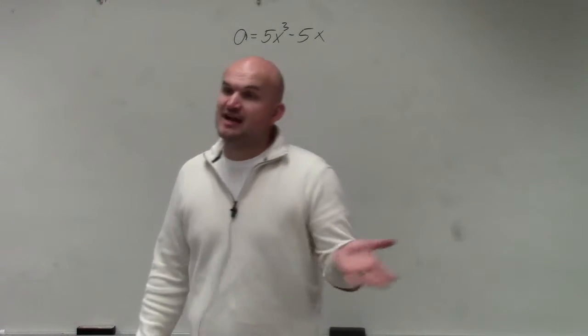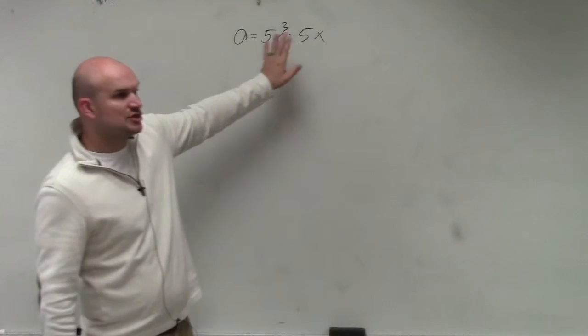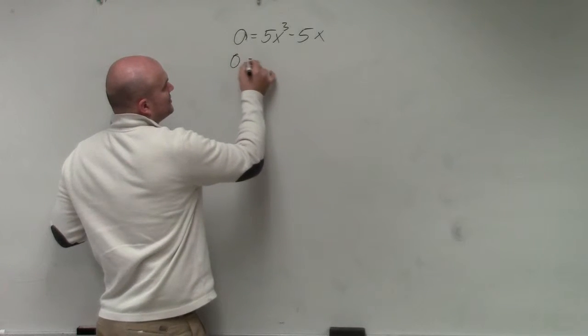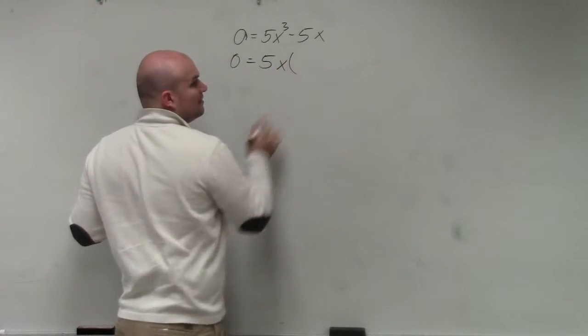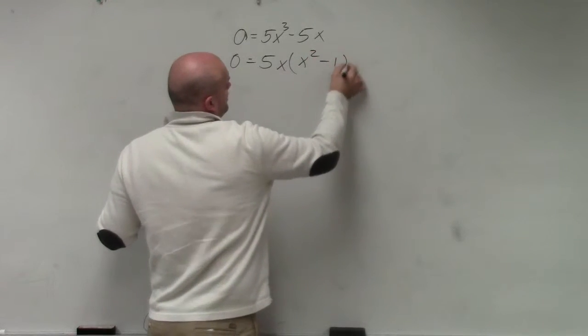Then the next thing is we always want to see can we factor out any common factors, which we call our GCF. Well, you can see that both of my terms share a 5, and they both share an x. So therefore, I'm going to factor out a 5x. By dividing out a 5x on both terms, I'm left with an x squared minus 1.